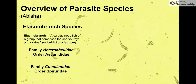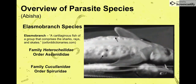These are the common parasites specifically found in elasmobranch species. There's not much information I could find on the public internet for them. Abisha included an image in the PowerPoint — these species come from the family Heterocheilidae and the order Ascaridida, or the family Cucullanidae and the order Spirurida. And here is what I think is a granuloma — one of the side effects these parasite species cause, little bumps or swollen nodules.